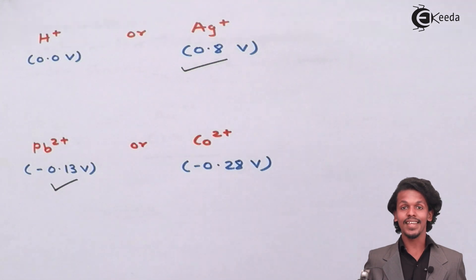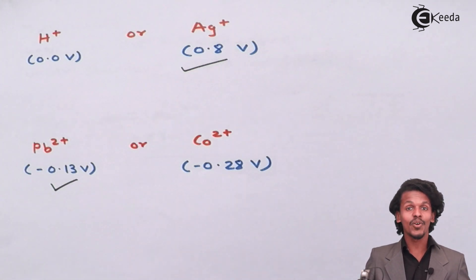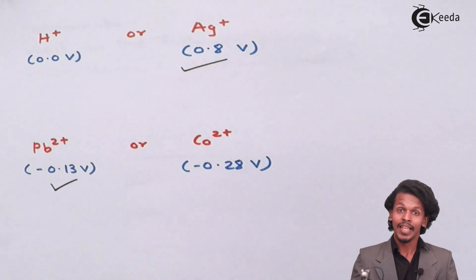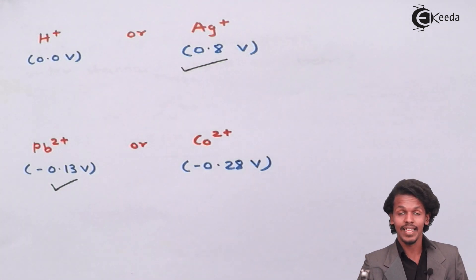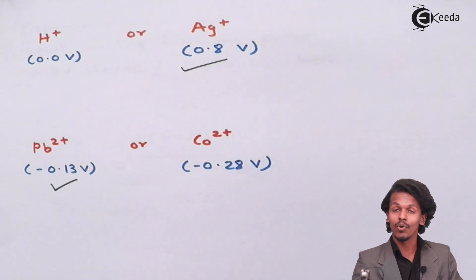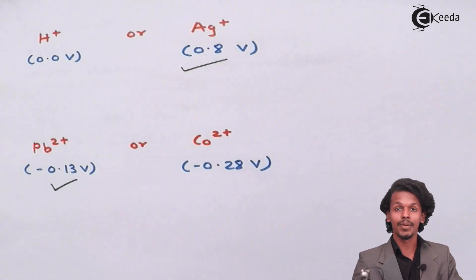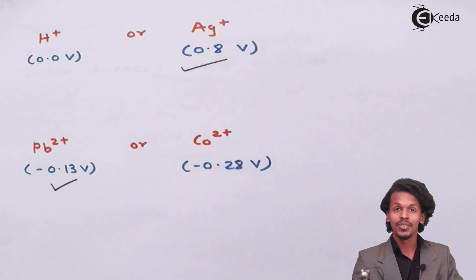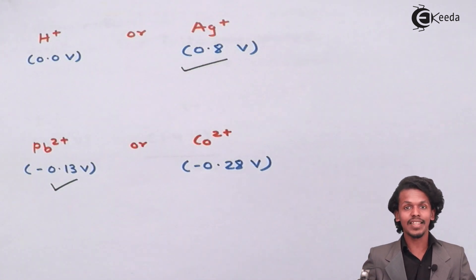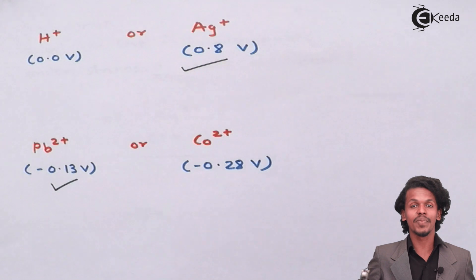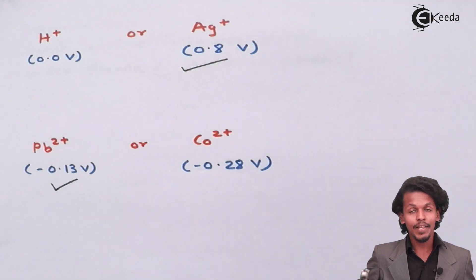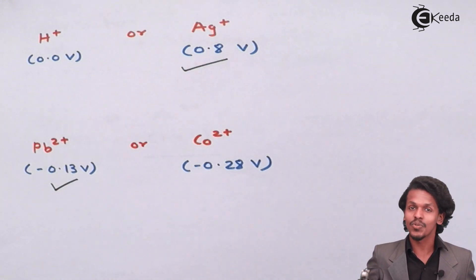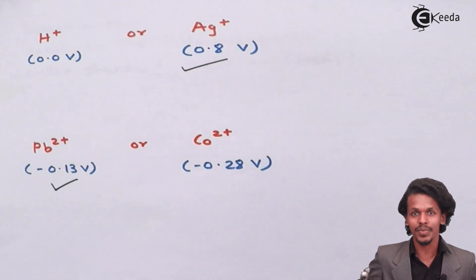So I hope you now have a clear idea of how to predict which electrode acts as an anode or cathode and what kind of reaction a particular electrode will show. Thank you friends for watching this video. Please share it with your friends and don't forget to subscribe. Thank you so much.